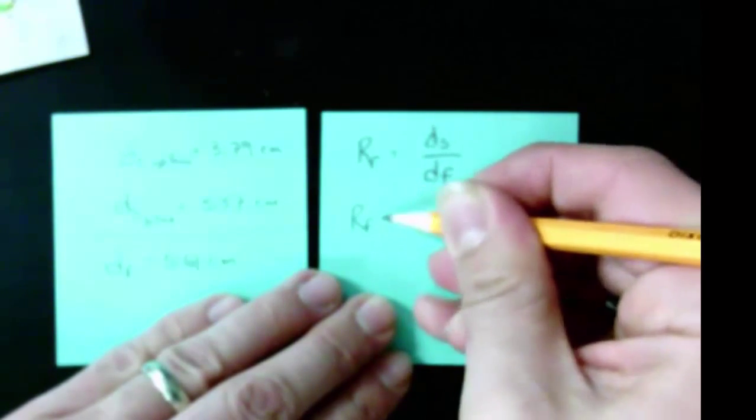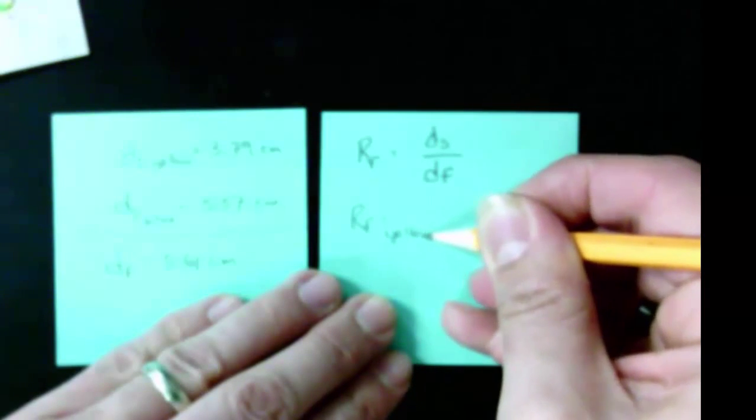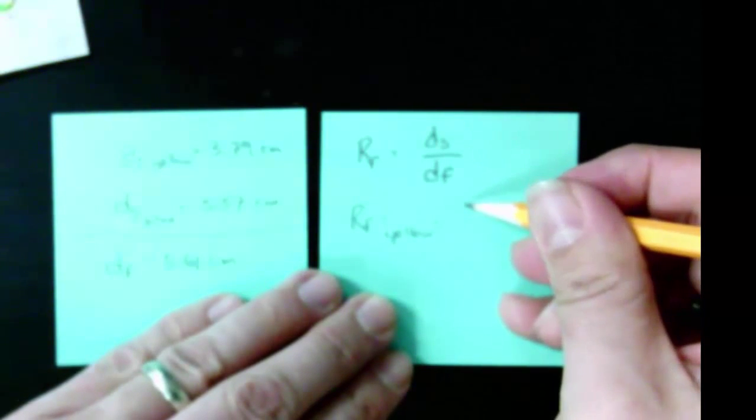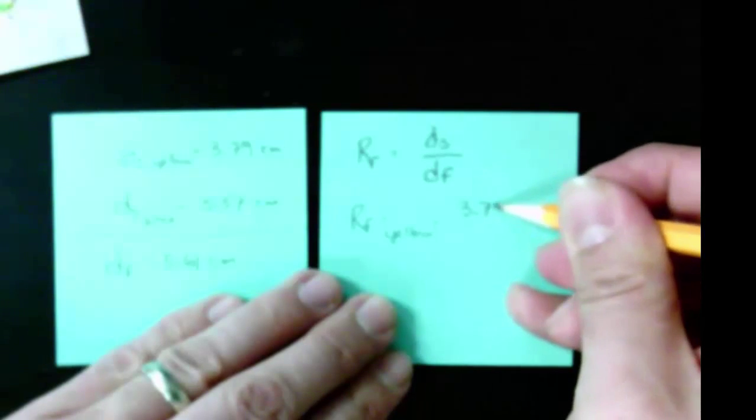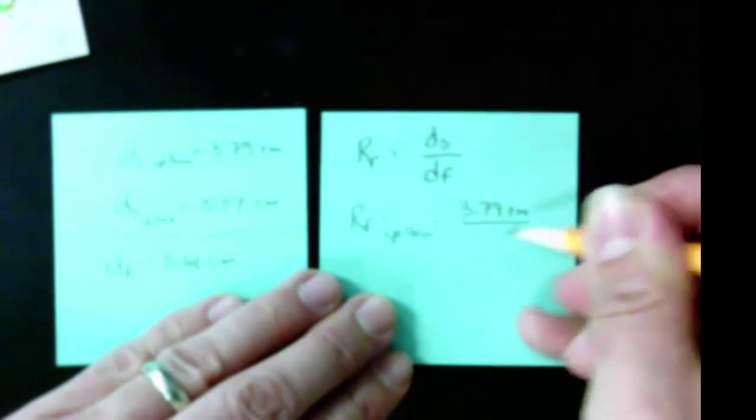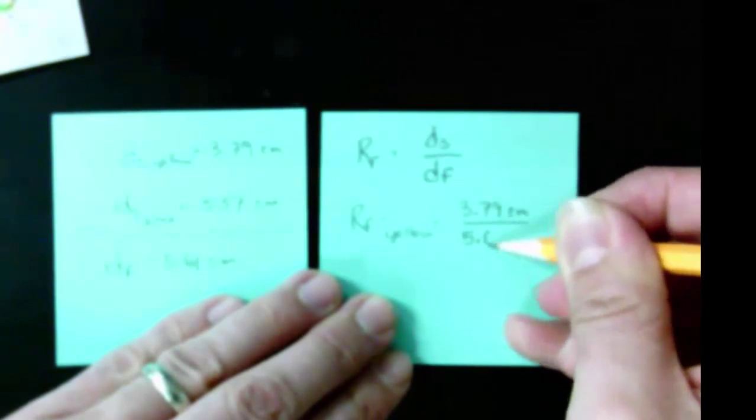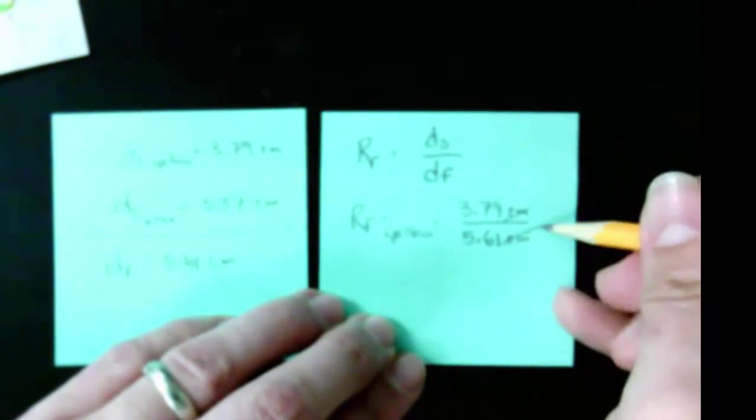So the rf for the yellow is ds, which is 3.79 centimeters, divided by 5.61 centimeters, that's my df value. Centimeters will cancel. rf does not have a unit.